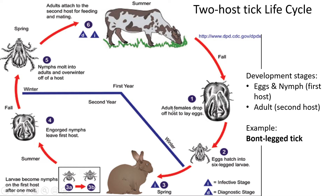The stages are: eggs, then nymph or larva on the first host, and then the adult on the second host. The example here is the bont-legged tick. These ticks usually have a red or black body and legs of two or three different colors — that's why they're called bont-legged.